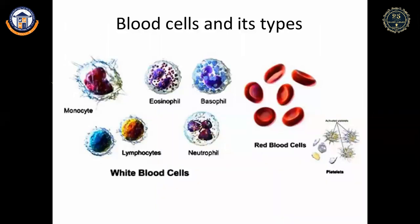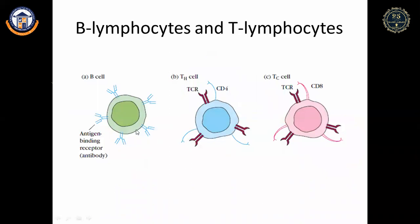Blood cells include WBCs, RBCs, and platelets. Among these, WBCs play the major role in the immune system. Granulocytes are neutrophils, eosinophils, and basophils; monocytes and lymphocytes are agranulocytes. Lymphocytes include B lymphocytes and T lymphocytes. T cells include helper T cells with CD4 markers and cytotoxic T cells with CD8 markers; B cells have B cell receptors (BCRs) — antibodies attached to them.